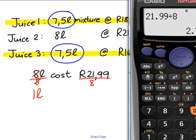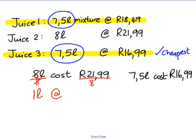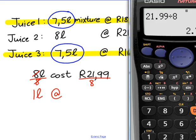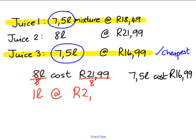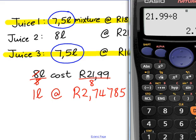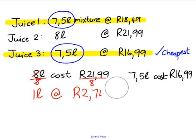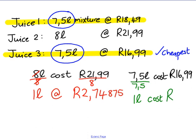That gives us one liter at $2.74875 for juice two. Now I'm going to do the same for juice three — I'm going to divide by 7.5 to get one liter. So one liter of juice three will cost $16.99 divided by 7.5.